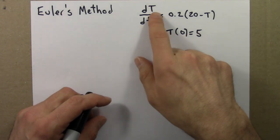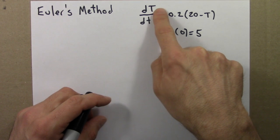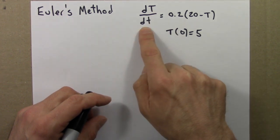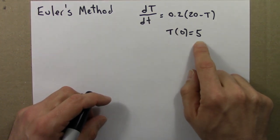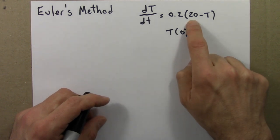This describes the rate of change of the temperature—capital T is temperature, little t is time—of an object that is originally at 5 degrees, that's placed in a 20 degree room.